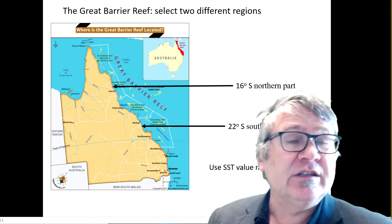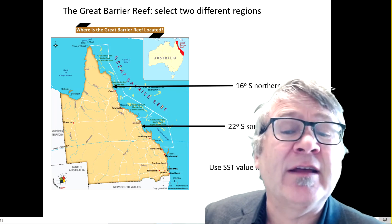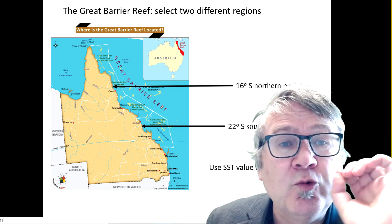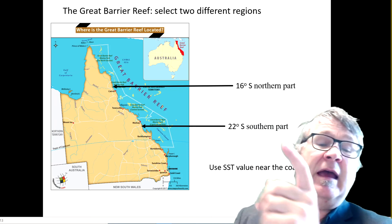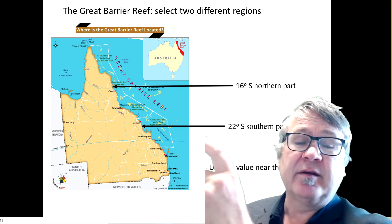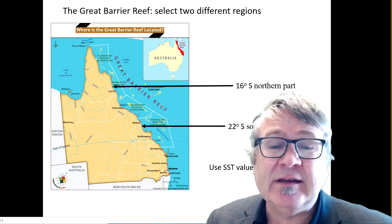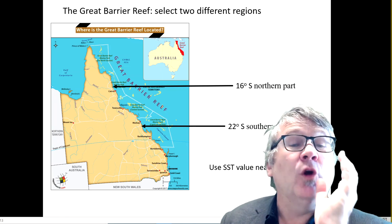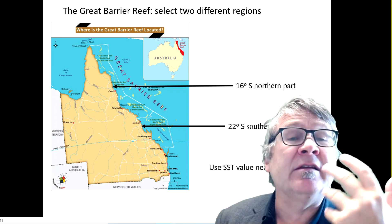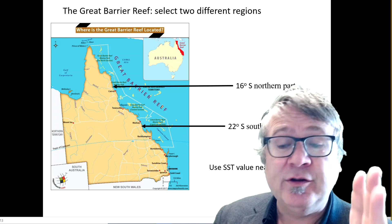We're not using any fancy GIS or other software to extract values — we do it visually. We look at a map, look at where 16 degrees south is, and read off a temperature value. Similarly, 22 degrees south you can use as a reference for the central region. You might change your mind and use 21 or 20 degrees south — that's fine. You should also look at the temperature value near the coast, because the barrier reef is located near the coast and not offshore. That's an important point.